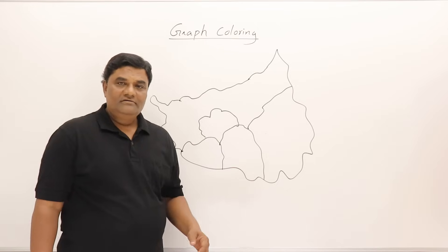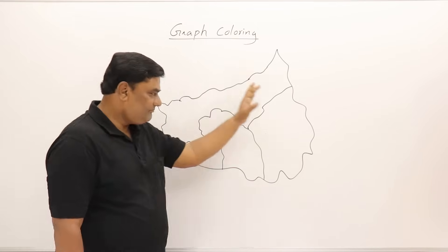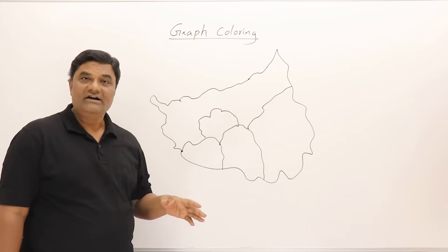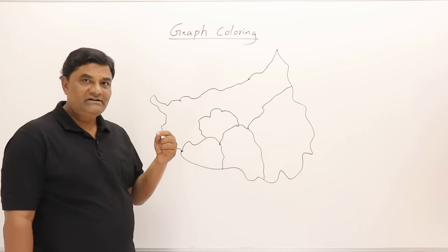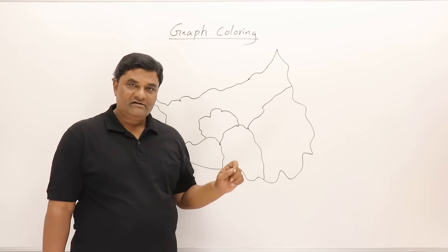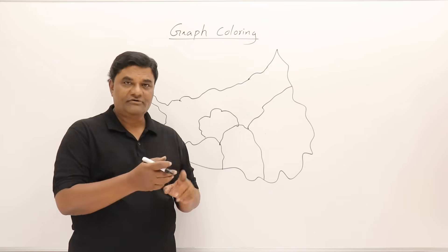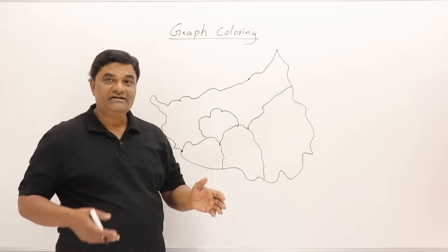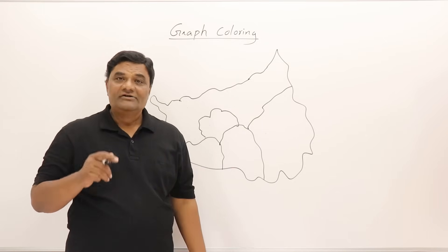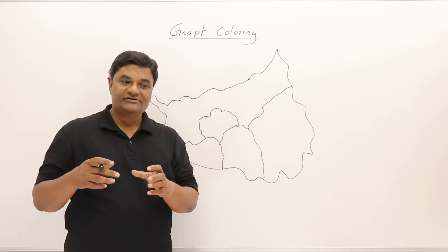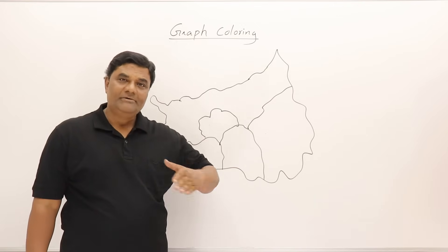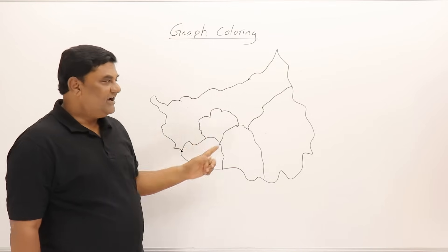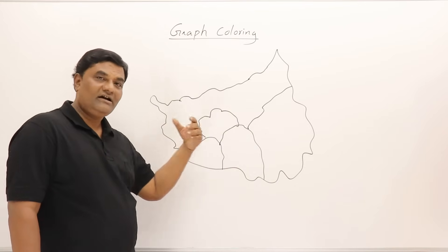The graph coloring problem has a famous real-world application: coloring a map so that no two adjacent regions share the same color. In olden days, printing required passing the paper through the press once for each color. To minimize cost and time, printers needed the minimum number of colors — so the map coloring problem became critical. The map is converted into a graph to solve it.